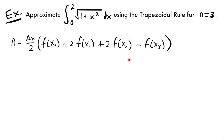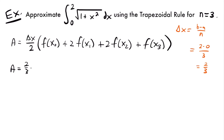To solve for the area we need delta x, which equals b minus a divided by n. From our integral, a is 0 and b is 2, so delta x equals 2 minus 0 divided by 3, which equals 2 thirds. So the area equals 2 thirds times 1 half, multiplied by f of 0 — x sub 0 is our lower bound of 0. Then every subsequent x value we add 2 thirds.